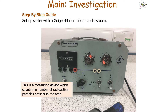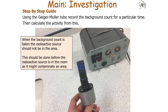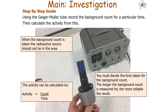Set up a scalar with a Geiger-Müller tube in a classroom. A scalar and Geiger-Müller tube is a measuring device that counts the numbers of radioactive particles or emissions present in an area. First, record the background count for a particular time — the radioactive source should not be in the area when doing this. You can calculate your activity or count rate using the equation: count divided by time. The longer the background count is measured for, the more reliable the result.